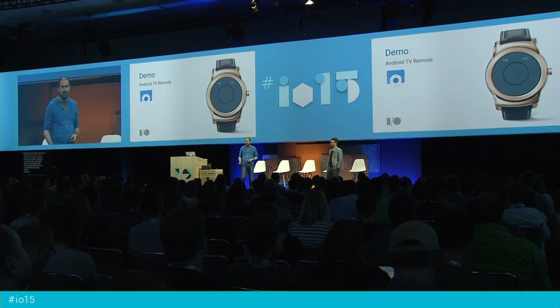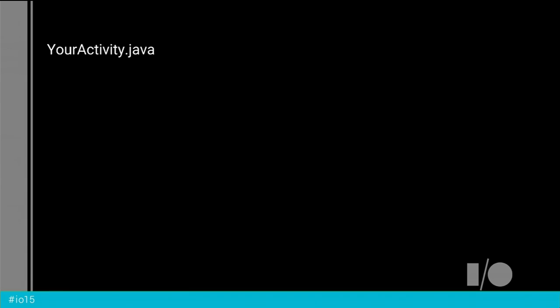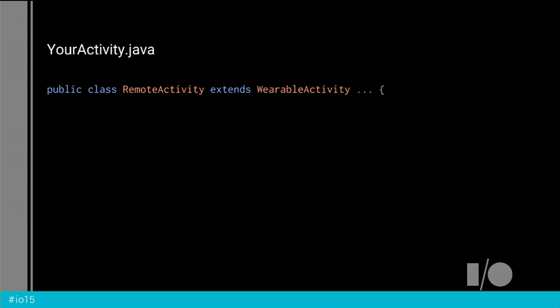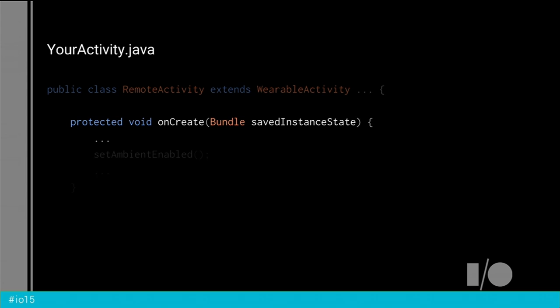Now that you've seen some of the power, let's take a look at what you need to do to enable these features in your own applications. We've tried to make this as simple as we possibly could. There are just a few simple changes you need to make to your app to enable always-on. The first thing you need to do is take any activity that you want to remain in the foreground when the watch goes into ambient low-power mode, and have it extend from WearableActivity. This is a base class that provides all this functionality. Then in your onCreate method, you simply need to call one method: setAmbientEnabled. Now your activity will remain in the foreground when the watch goes into its ambient low-power mode.